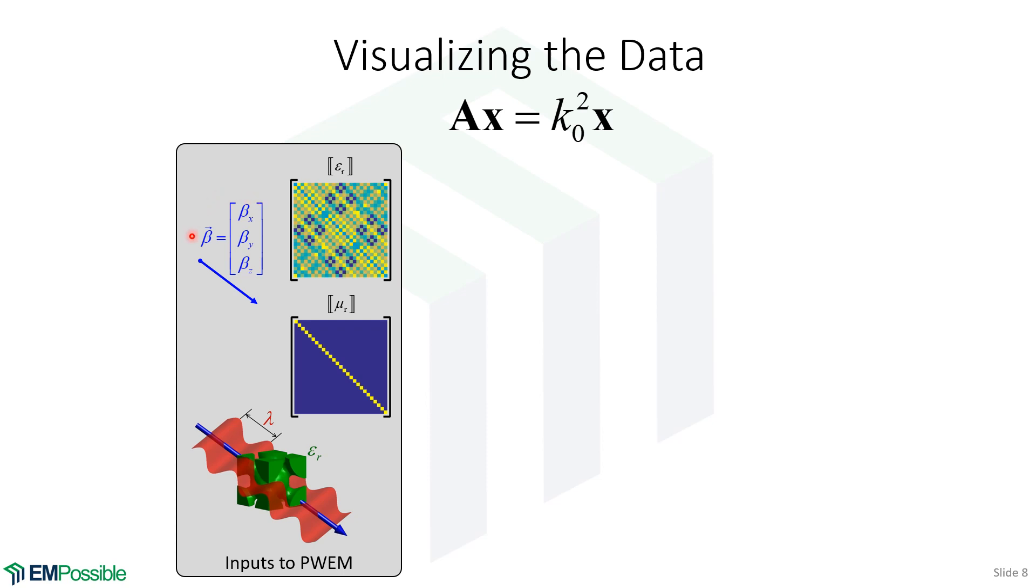We also have to provide a Bloch wave vector. This is the direction the wave is going in. And in fact, it's a vector, so it's conveying two pieces of information at the same time. It's conveying what direction this Bloch wave is going through the unit cell, and it's also conveying the wavelength because the magnitude of that Bloch wave vector is 2 pi divided by the wavelength. So really, the plane wave expansion method is answering a question for us. In this unit cell, what goes this way with this period? And we send this into plane wave expansion method. It does its stuff, and out comes the answer.